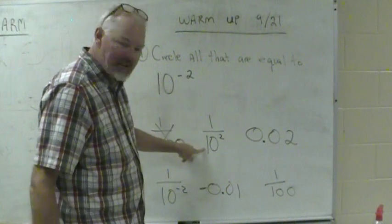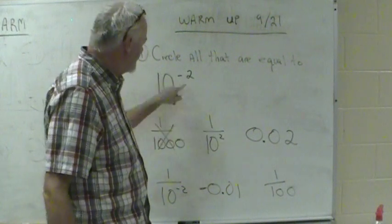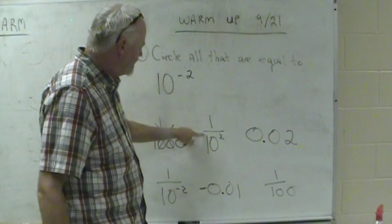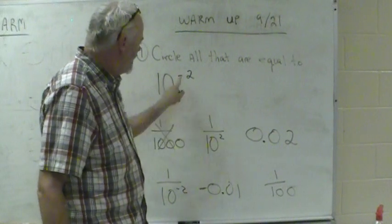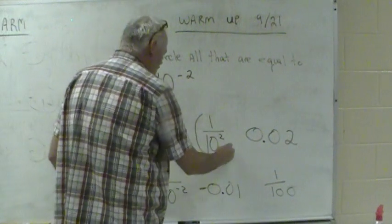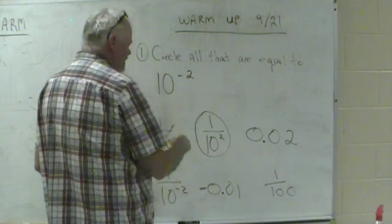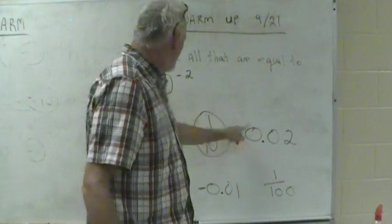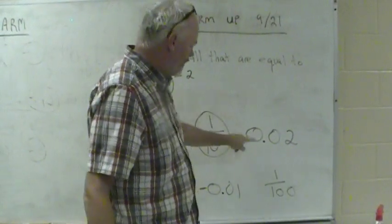This one, is 10 to the negative 2 the same as 1 over 10 squared? Yes it is. That line right there takes the place of that. That's what that turns into. You can never ever have a negative on the bottom. So this one we should circle. This number and this number are the same.